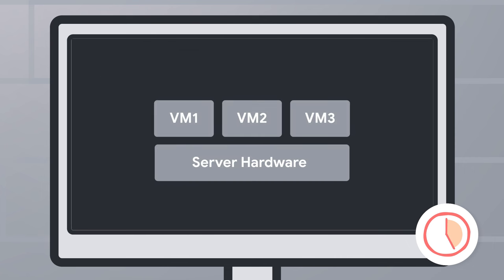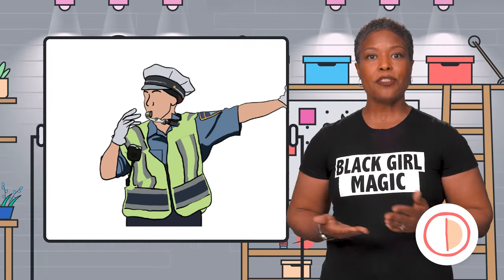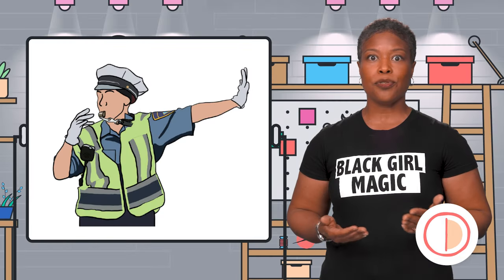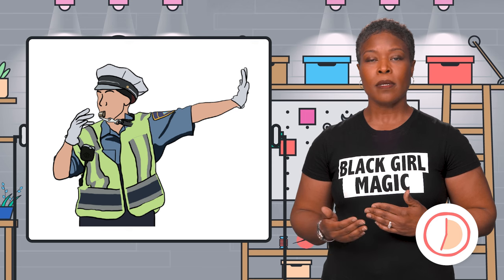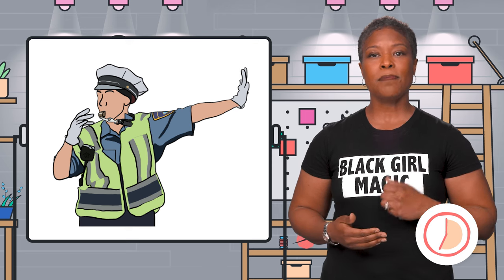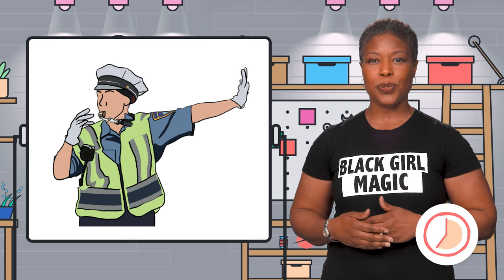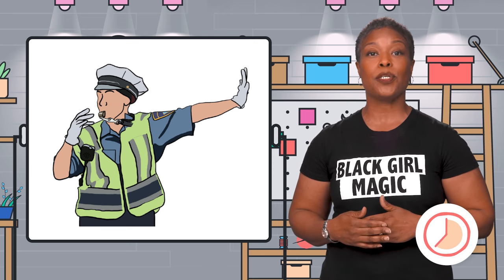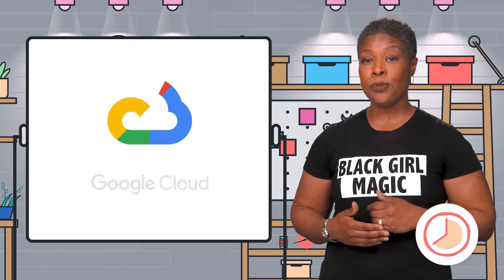A hypervisor is the software that sits between the physical hardware and the VM. Like a traffic cop would control the flow of traffic coming and going through the intersection, the hypervisor is making sure each VM gets the resources it needs in an orderly manner.